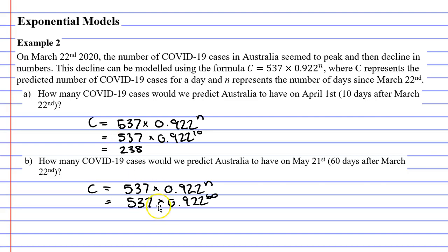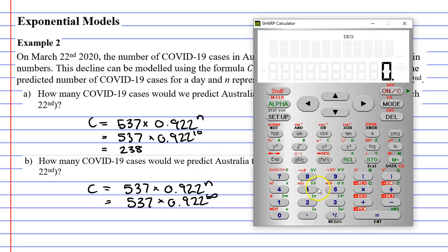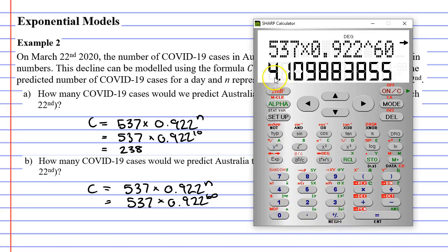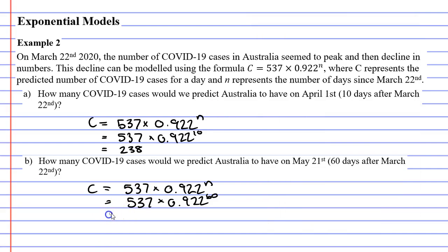Now, because in this example, we're modeling exponential decay, this number should be a lot smaller this time. So we'll bring up our calculator, 537 times 0.922 to the power of 60. And it comes out to about 4. So we're predicting that on May 21st, we should only have 4 cases.